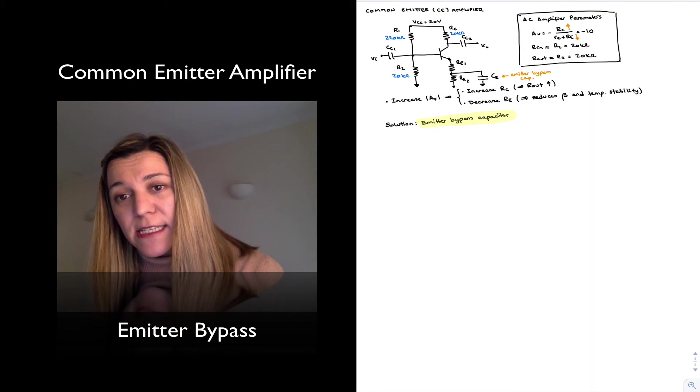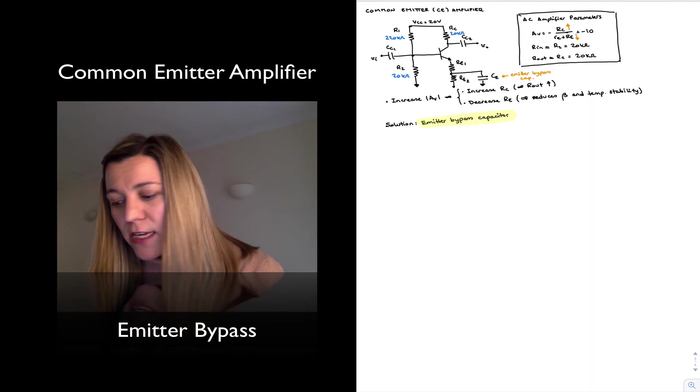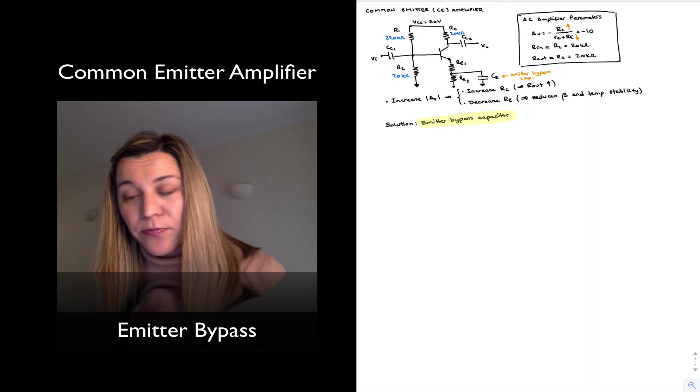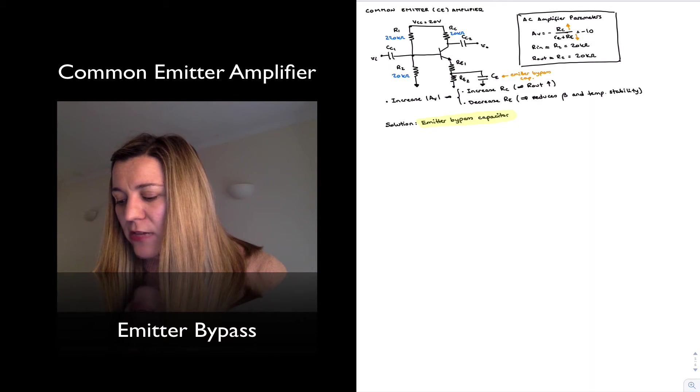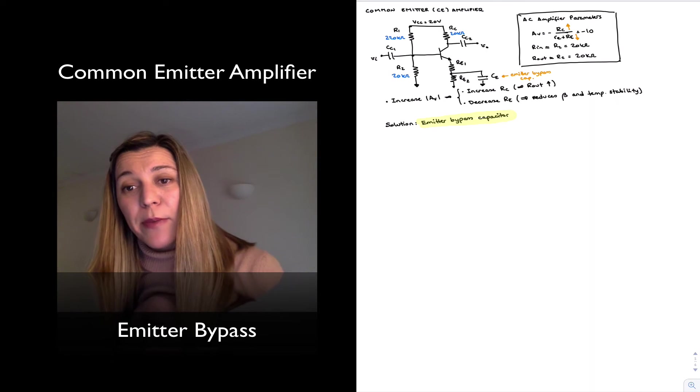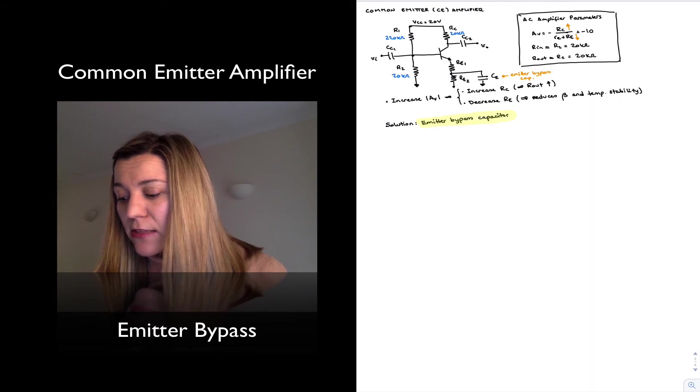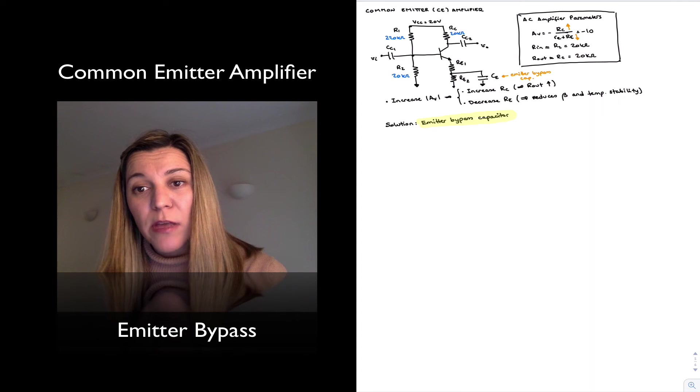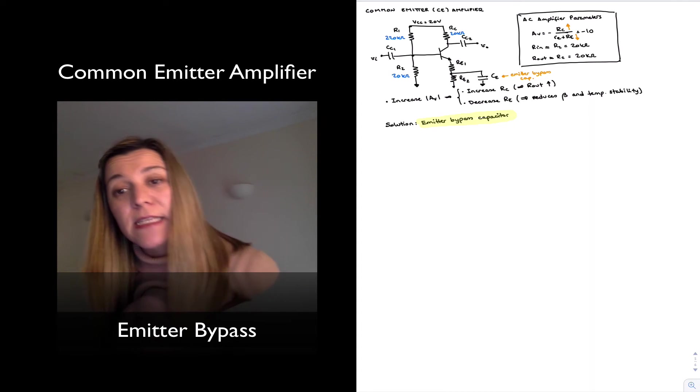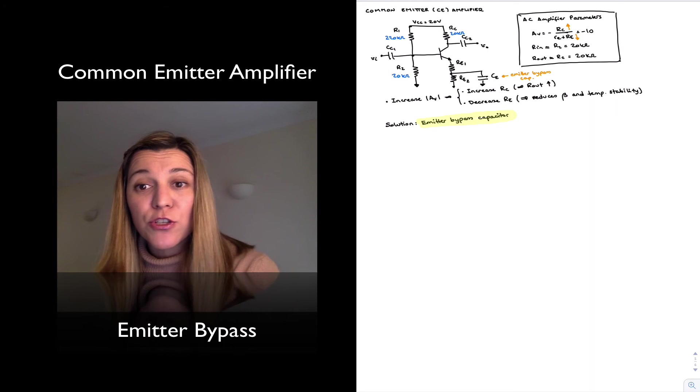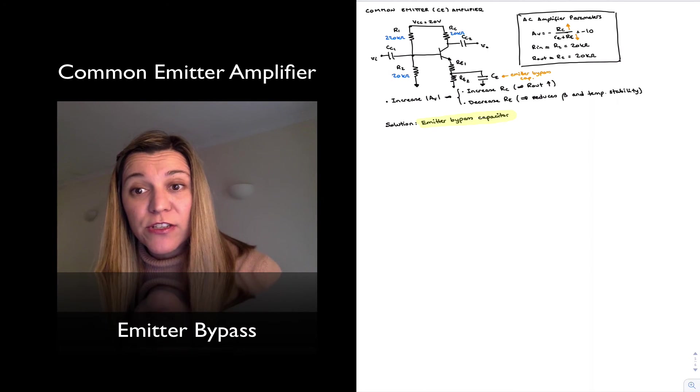But for AC signals, so in the AC equivalent circuit, CE behaves as a short circuit. And so that means that RE2 is bypassed, meaning for AC purposes, what an AC signal sees is that the resistance connected to the emitter is RE1 and then it is a short to ground. So there's a short to ground in parallel with RE2 and the parallel combination of the two is just a short to ground.